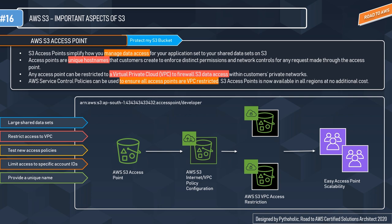The second use case is to restrict access to a VPC. Access points can be restricted to a Virtual Private Cloud to firewall S3 data access within the customer's private network. You can also create a Service Control Policy (SCP) so that all access points are restricted to the VPC. The third use case is to test new access policies — before migrating applications to access points, you can create and test them.